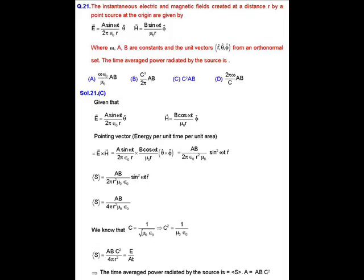MCQ question number 21. In this case, the instantaneous electric and magnetic field created at a distance r by a point source at the origin is given to us. The expression of E and H are in theta cap and phi cap direction and in these expressions omega, A, B are constants and the unit vector r, theta and phi are used. Now, we have been asked to calculate the time averaged power radiated by the source.